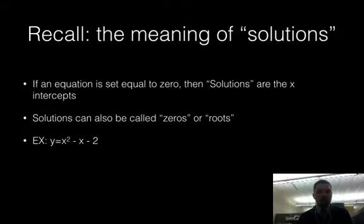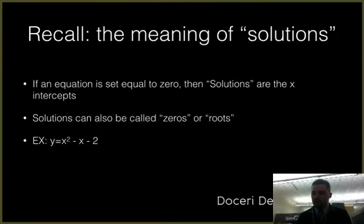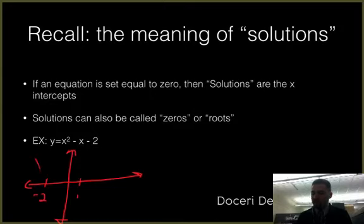Solutions can also be called zeros or roots or other names. For example, if you had this quadratic right here, y equals x squared minus x minus 2, and you graphed it, you would find that it had solutions at negative 2 and 1. In other words, you would see that the graph looks something like this. And these would be your solutions, 1 and negative 2.